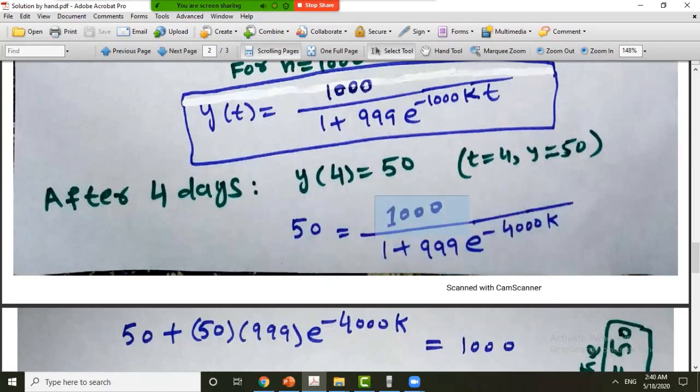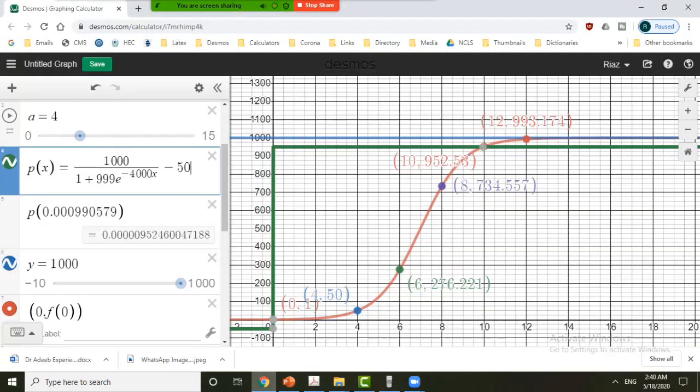So if this is the equation, write this in the form 1000 divided by this expression minus 50. Let this be a function. So the function will cross x-axis at the value of k.